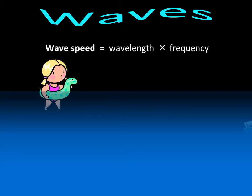The wave speed tells us how fast the wave is traveling. It is given by the wavelength times the frequency.